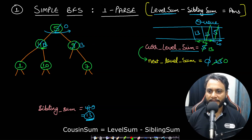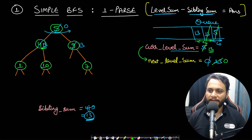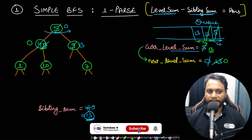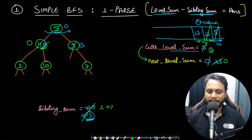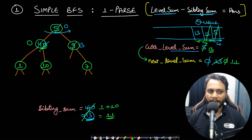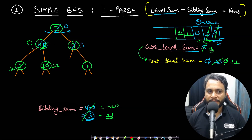We take out the first node with stored value 13. Current level sum is 13, sibling sum is 13, so we subtract and replace with 0. This node has left child 1 and right child 10, giving sibling sum 11. We add 11 to next level sum, update both children's values to 11, and push them into the queue.